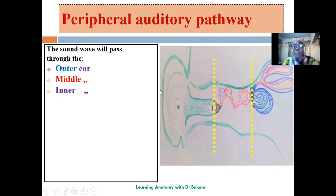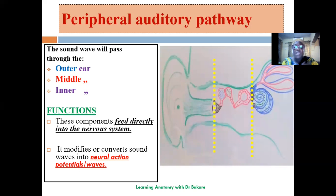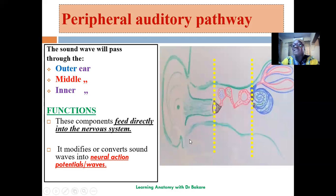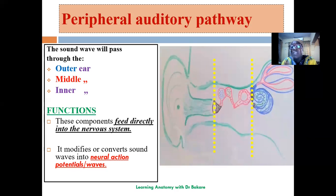The sound wave from the external environment passes through three sub-regions: the outer ear, the middle ear, and the inner ear. The functions of the peripheral auditory pathway include feeding the central nervous system with stimuli for interpretation, and converting sound waves to neural stimuli. As the sound goes from one region to the other, there is a form of modification. Let's examine the different regions of the peripheral auditory pathway.